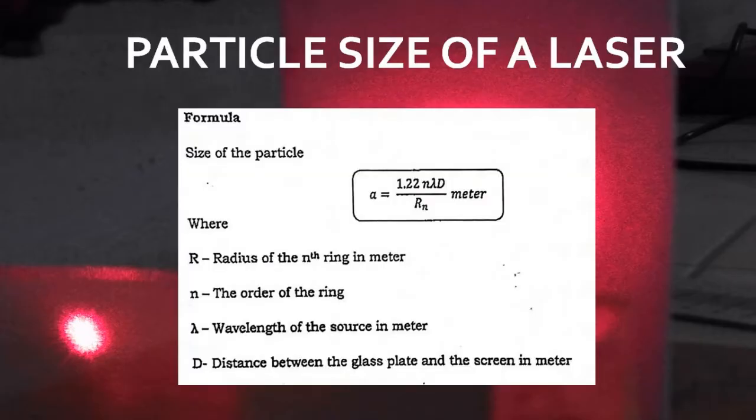Formula: Size of Particle a equals 1.22 n λ D divided by R_n in meters, where R is the radius of the nth ring in meter, n is the order of ring, λ is the wavelength of the source in meter, D is the distance between the glass plate and the screen in meter.